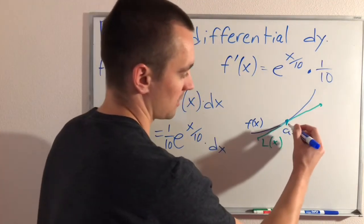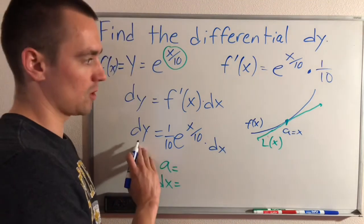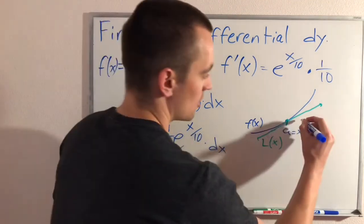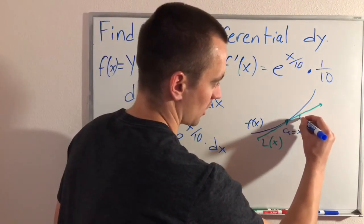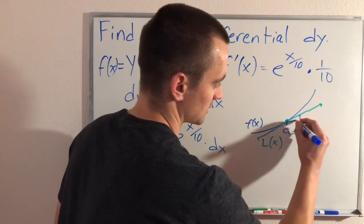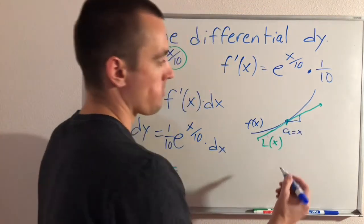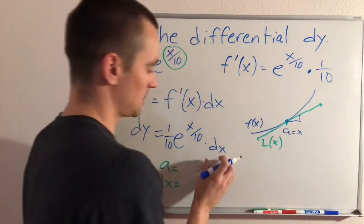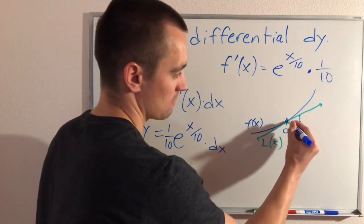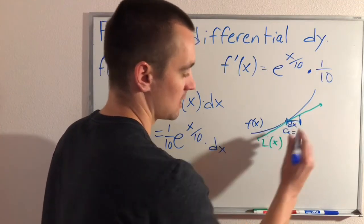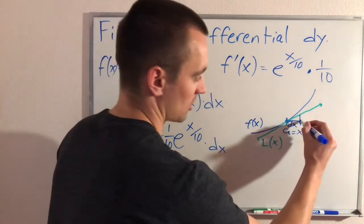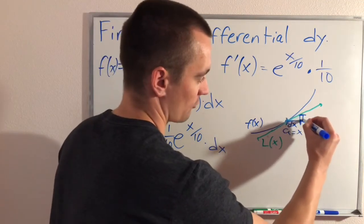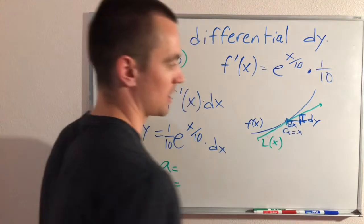And then what we want to think about is our dy or our differential represents how far we're going to go up if we go dx units over. So if we think about going dx over from a, this distance here would be dx. If we think about going dx over, what our differential represents is how far are we going to go up. And that's what dy is.